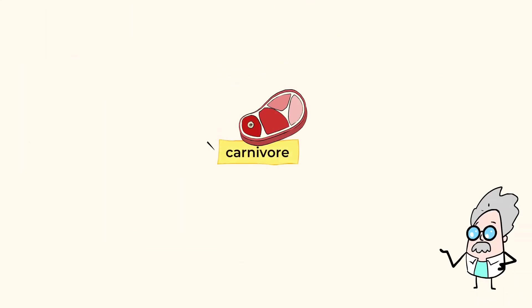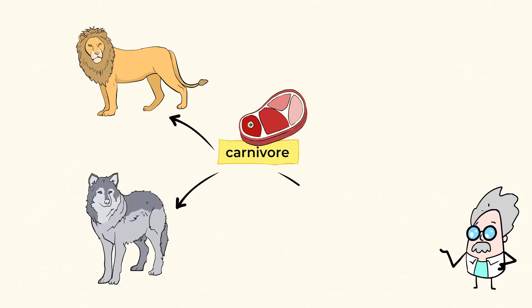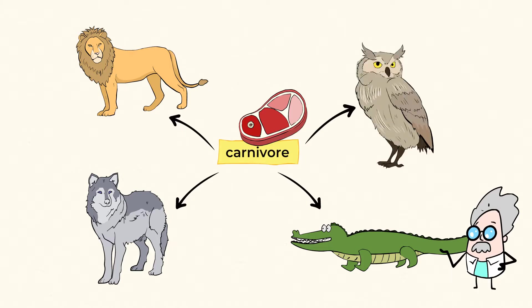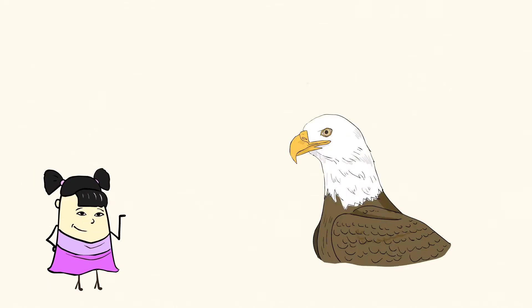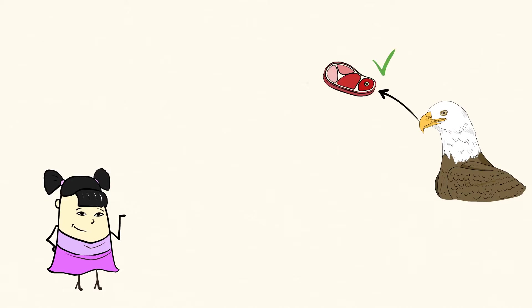Other carnivores are lions, wolves, alligators, and my favorite, the mighty owl. But not all carnivores have big teeth. Some of them have big beaks. Large birds like eagles use their sharp beaks to eat their food.